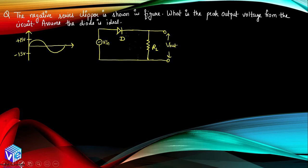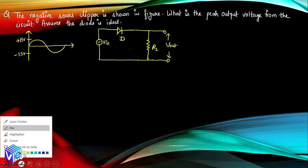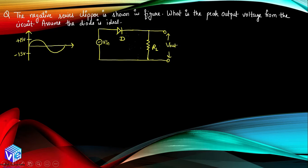Moving on to the next question: a negative series clipper is shown in the figure. What is the peak output voltage from the circuit? Assume the diode is ideal. The input voltage has a peak at +15 volt and a negative peak at -15 volt. We have a diode and a load resistance, with V_output taken across the load. Since the diode is connected in series with the load, this is called a series clipper.